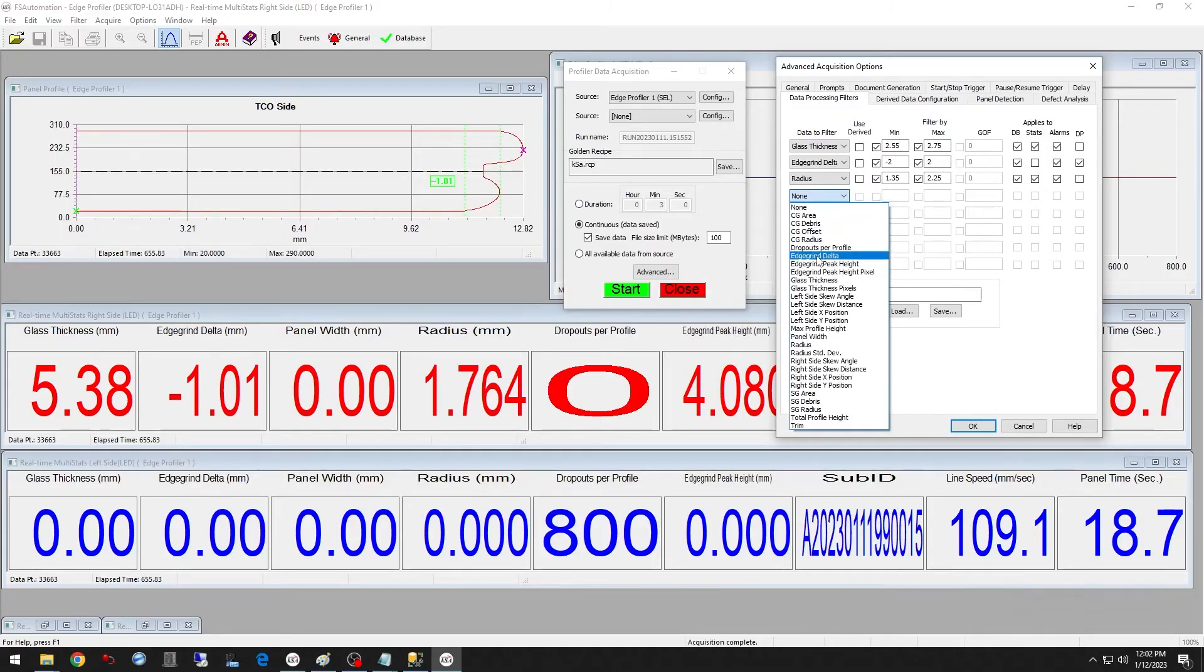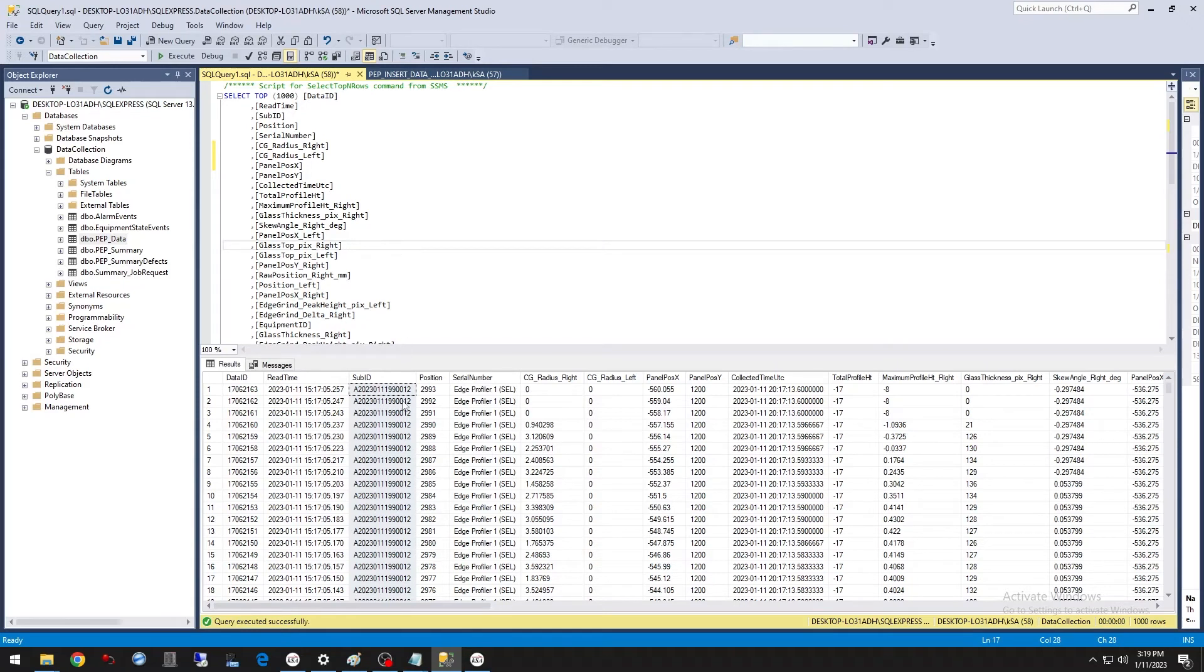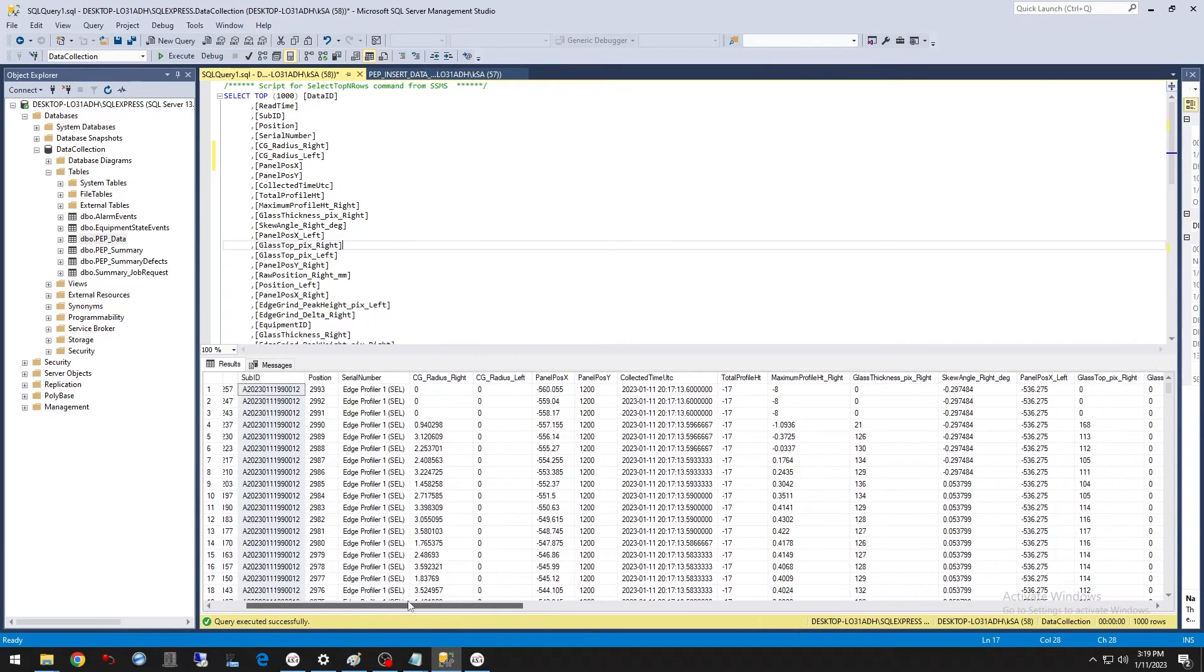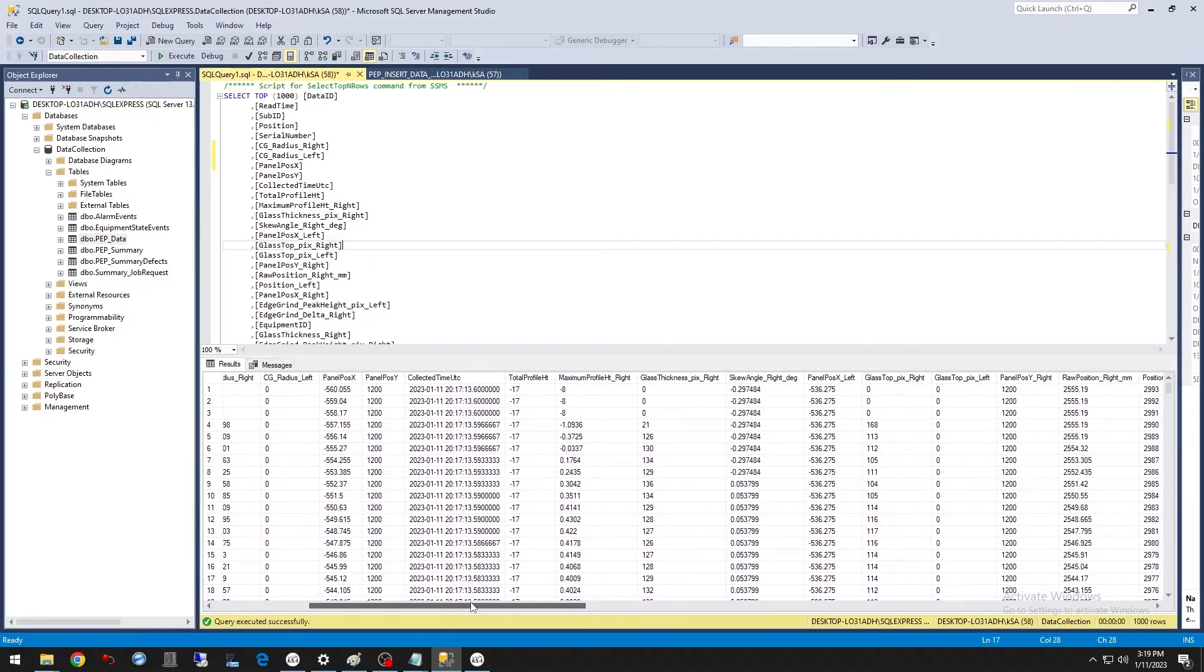The software is customizable and allows users to select specific measurement criteria for pass-fail determination and statistical process control. These results are organized and stored on a local PC for deeper quality analysis. Our systems can handshake with a PLC to improve factory automation using closed-loop control and flagging scrap parts.